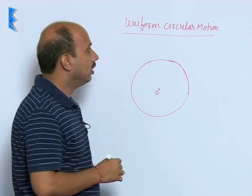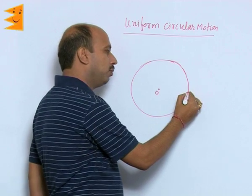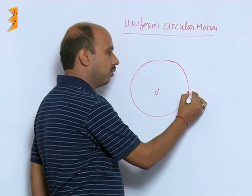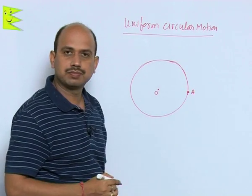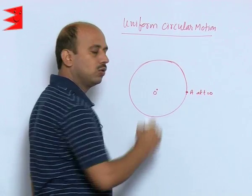So now see here in uniform circular motion, certain things are very important here. Suppose you have taken the point A from where motion starts, now we can take at here origin t is equal to 0.